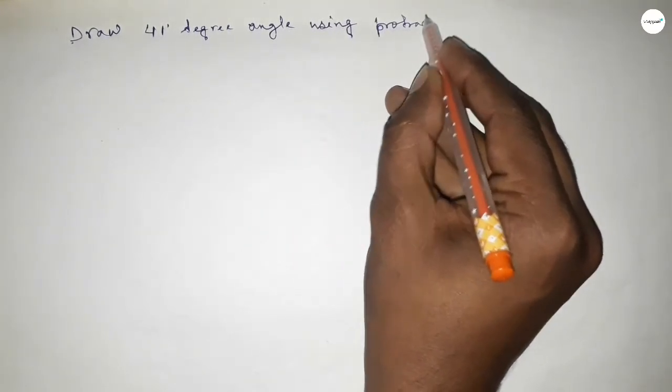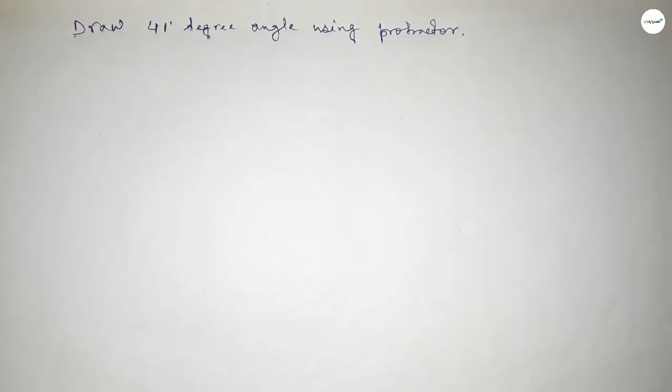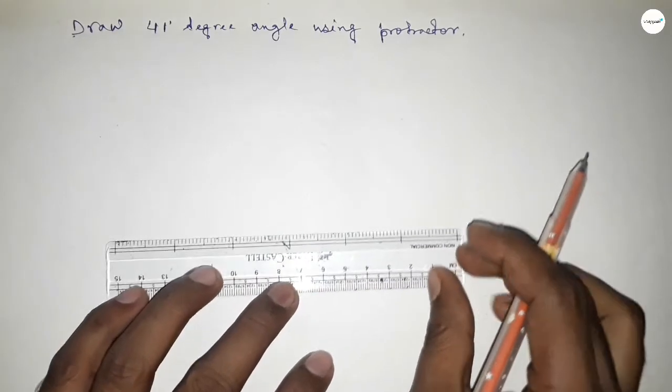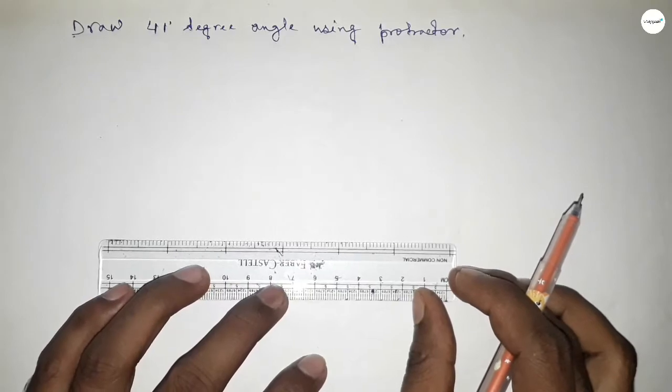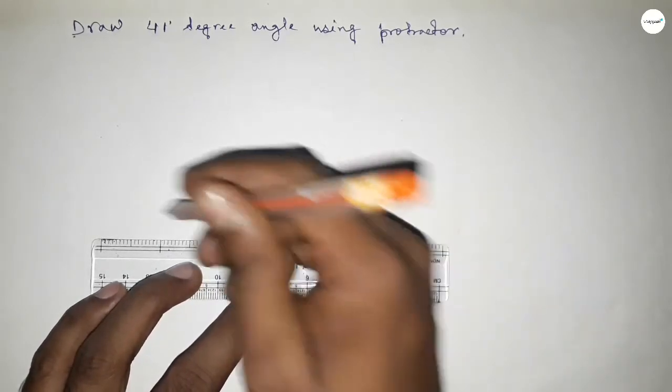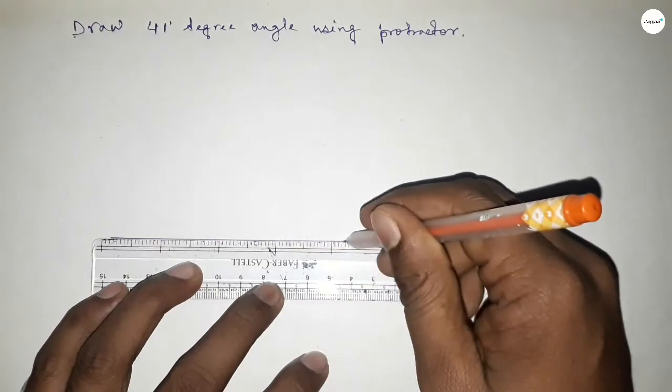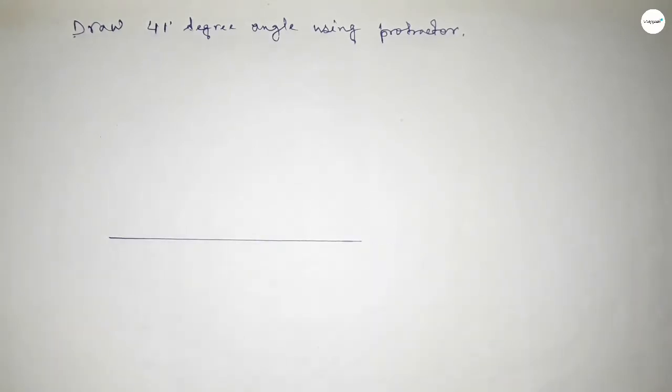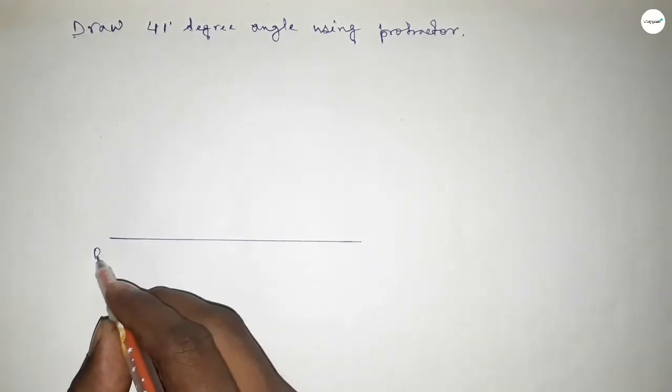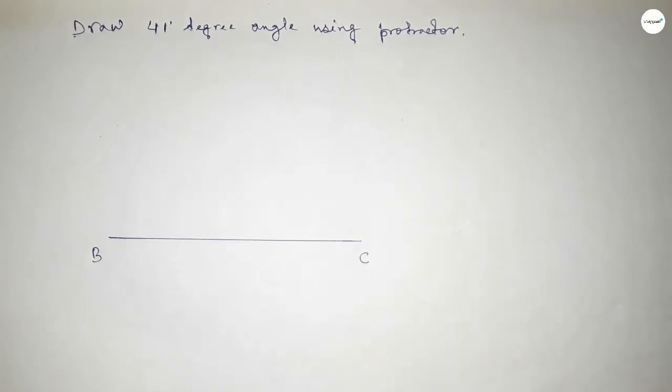So constructing a 41-degree angle, let's start. First of all, we have to draw a straight line of any length. Drawing here a line, taking this end as point B and this end as point C.